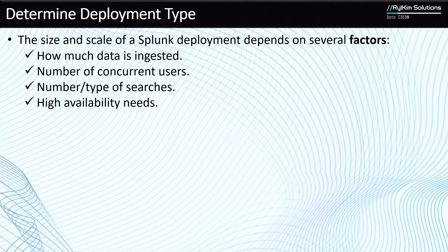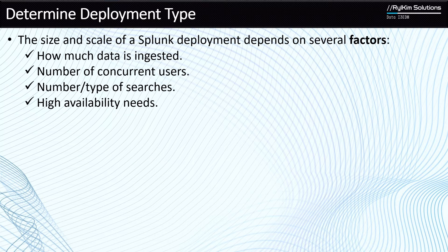The last one is high availability needs. We spoke about indexer clustering and search head clustering. If there are things like that that you need to take into consideration — do you always want to have access to the same data set, do you want to be able to search data every time — those are going to help you determine whether you need to do that kind of clustering. When you take all these factors and put them together, it determines the deployment type.